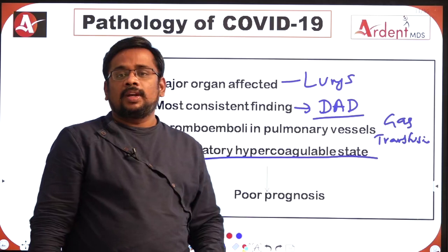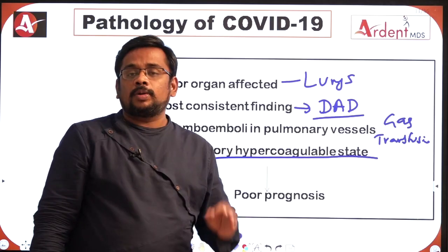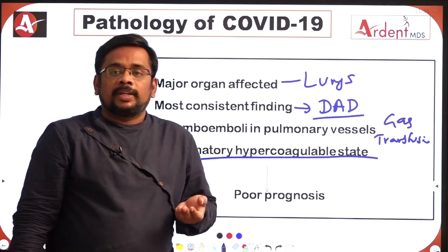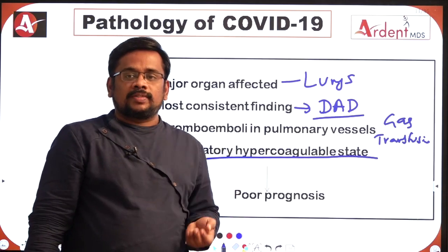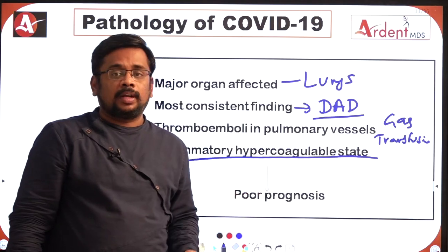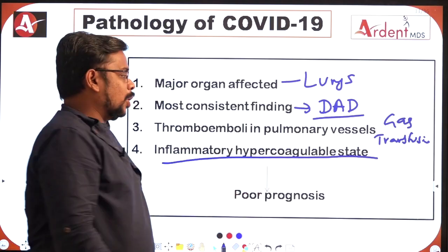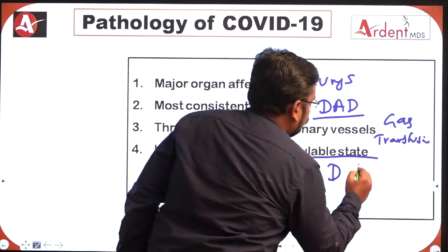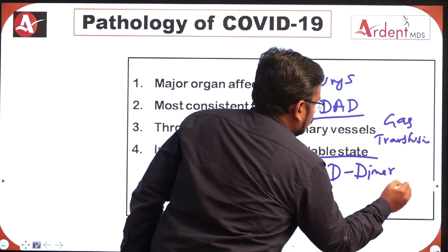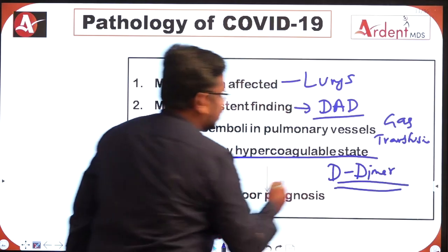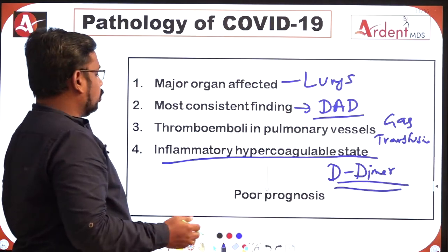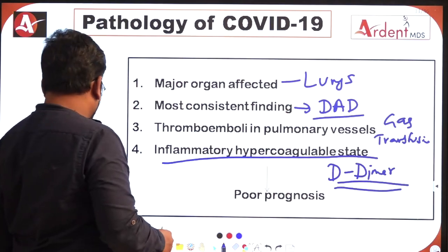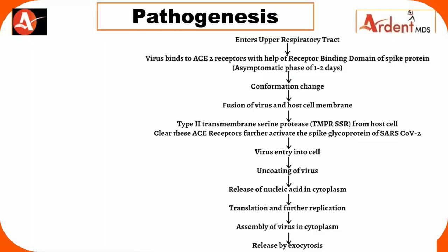If the patient goes into an inflammatory hypercoagulable state, the patient has a very poor prognosis. To determine whether the patient is prone to this state, you can check D-dimer. Based on this marker, you can assess whether the patient is prone to an inflammatory hypercoagulable state.